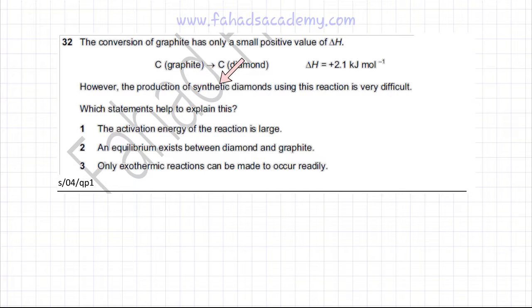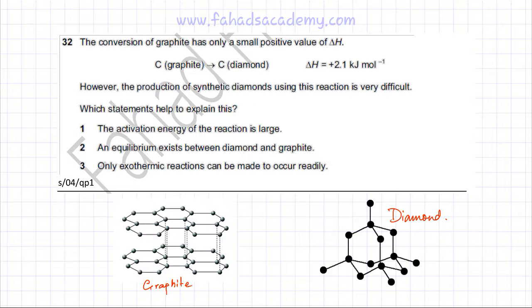However, the production of synthetic diamonds using this reaction is very difficult. So he's saying that this reaction normally doesn't occur and he's asking which statement helps to explain this. Now when you're converting graphite to diamond, so I've drawn the structures, this is the structure of graphite and this is the structure of diamond.